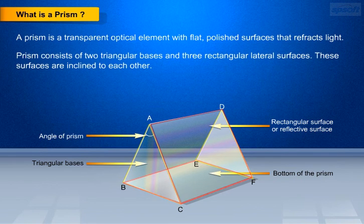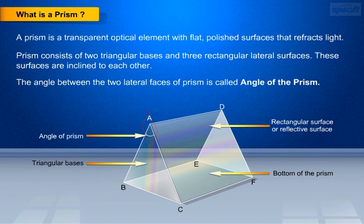Prism consists of two triangular bases and three rectangular lateral surfaces. These surfaces are inclined to each other. The angle between the two lateral faces of prism is called angle of the prism.